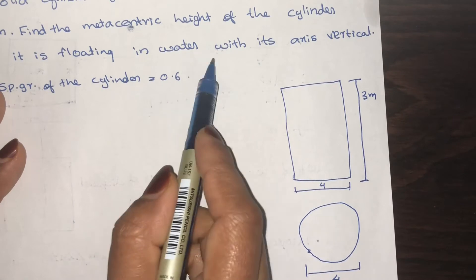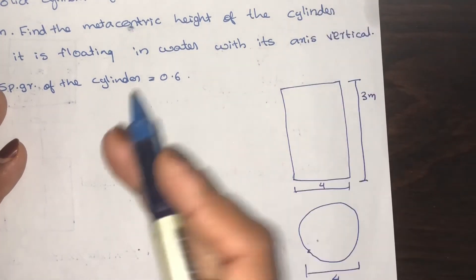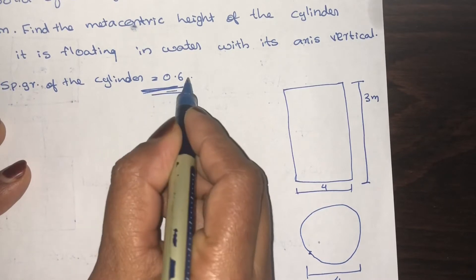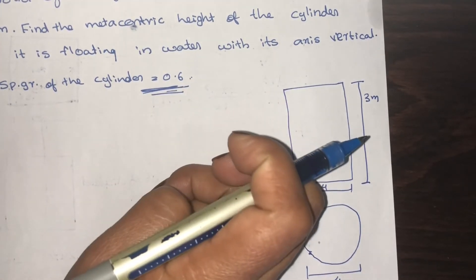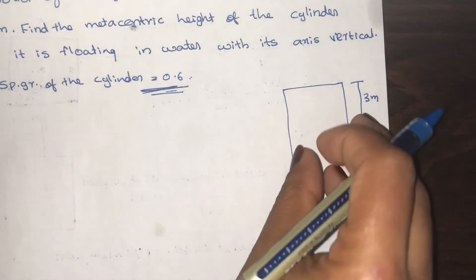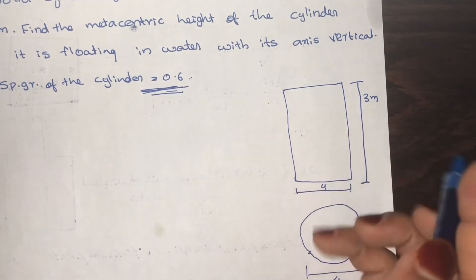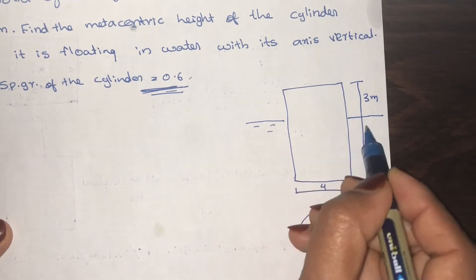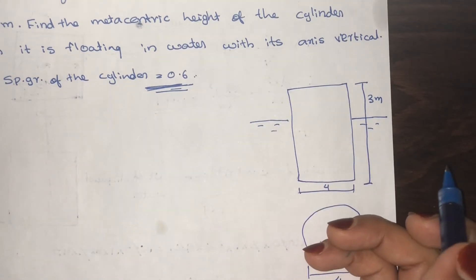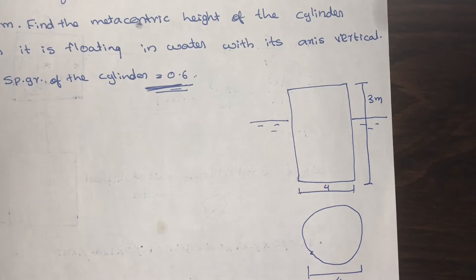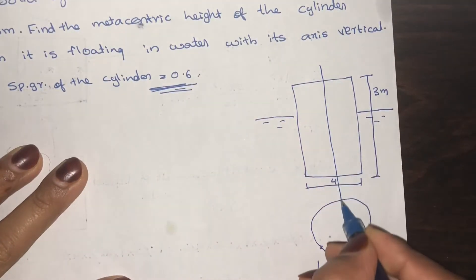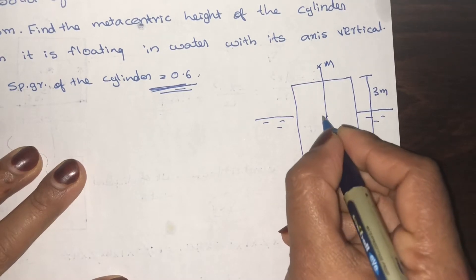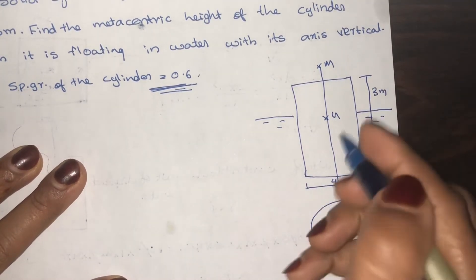Floating in water with its axis vertical. The height of the cylinder is given as 3 meter. This is the shape of the cylinder.